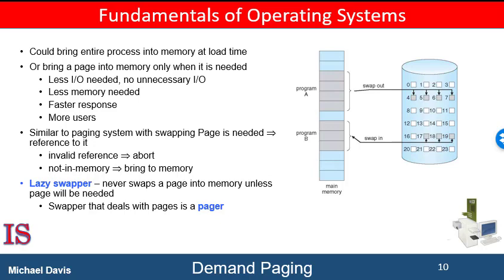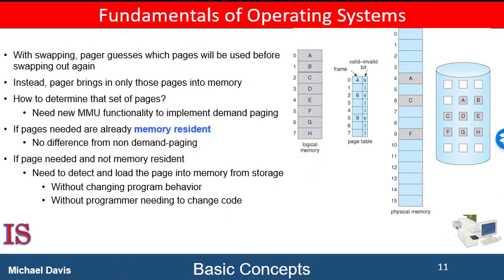Demand paging explains one of the primary benefits of virtual memory. By loading only the portions of programs that are needed, memory is used more effectively. With demand paging, while a process is executing, some pages will be loaded into memory and some will be in secondary storage. Therefore, we need some form of hardware support to distinguish between the two.